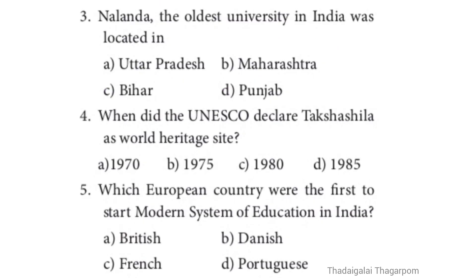Question 3: Nalanda, the oldest university in India, was located in — A. Uttar Pradesh, B. Maharashtra, C. Bihar, D. Punjab. The correct answer is C, Bihar. Nalanda, the oldest university in India, was located in Bihar.